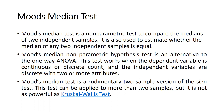This test works when the independent variable is continuous or discrete count, and the independent variables are discrete with two or more attributes. Mood's Median Test is a rudimentary two-sample version of the sign test. This test can be applied to more than two samples, but it is not as powerful as the Kruskal-Wallis test. I will share the Kruskal-Wallis test video link as well.